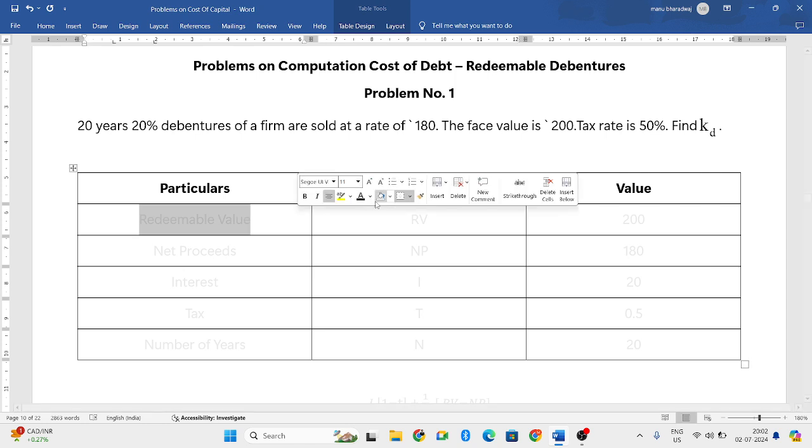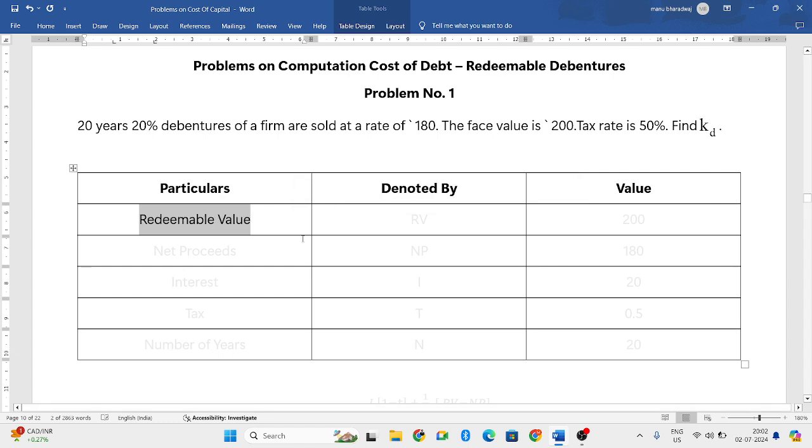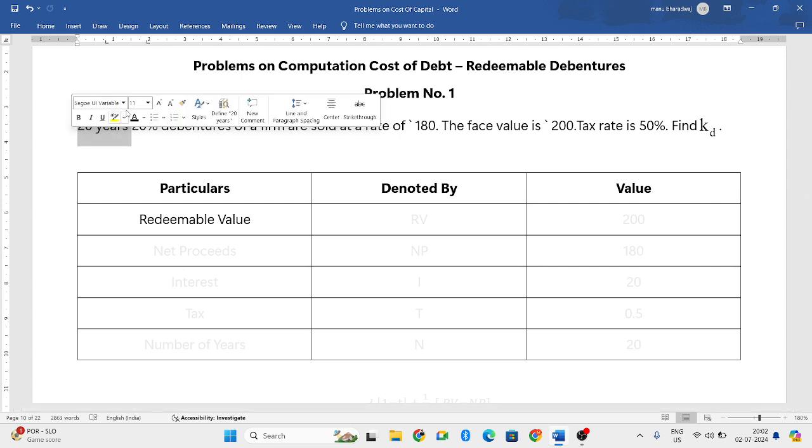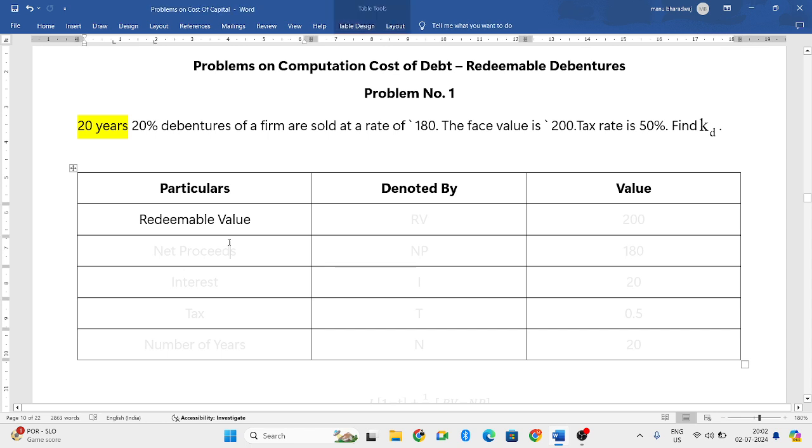We need for calculating the cost of debentures when it is redeemable debentures, we require redeemable value. Redeemable value means what is the value you have to pay after the debenture is redeemed. For example here, in the question they have told that it is for 20 years. After 20 years, what is the amount you have to pay back to your debentures is known as redeemable value.